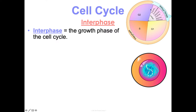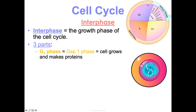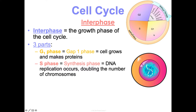Interphase is the growth phase of the cell cycle — the majority of a cell's life is in interphase. It's subdivided into three parts: G1 is the gap one phase, when the cell is just growing and making proteins. Then we have S phase, or synthesis phase, where DNA replication occurs — we are doubling the amount of DNA in your cell. This is critical: your cell is going to divide, and if we didn't double the DNA, each resulting cell would only have half. Your DNA is the instruction manual for making you who you are, so you need the entire manual in all your body cells.